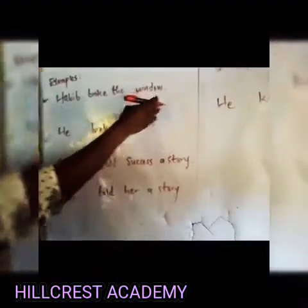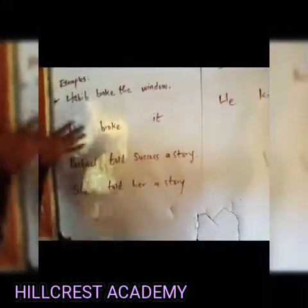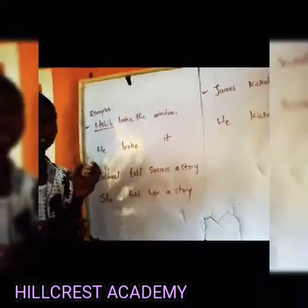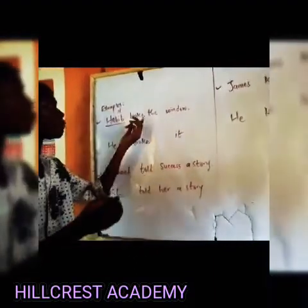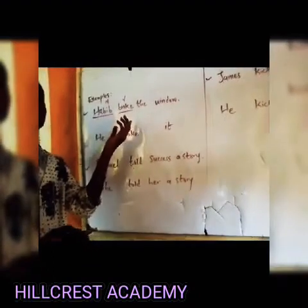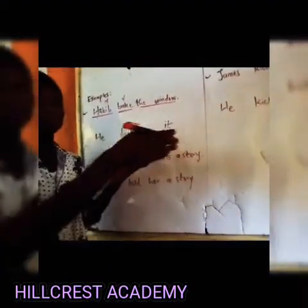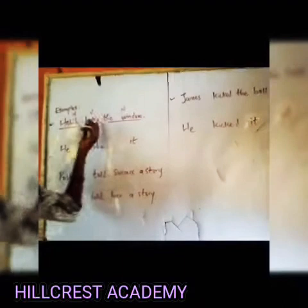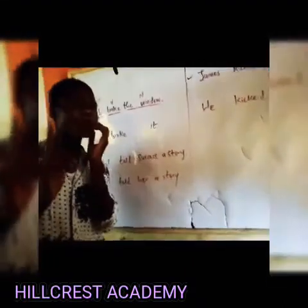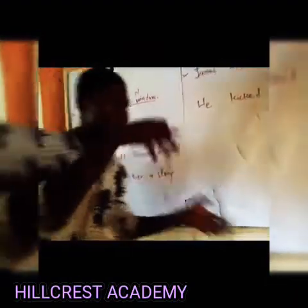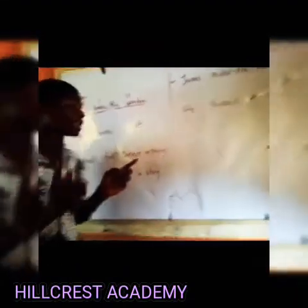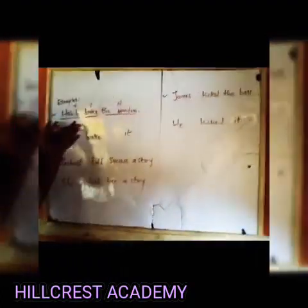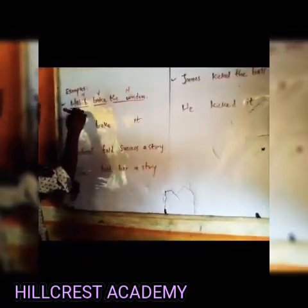The first example is: 'Abib broke the window.' Now if you look at this sentence, there are some basic elements here. Abib is a noun — the part of speech is a noun. Broke is a verb — it is an action. The window is another noun with an article, so it is also a noun. Now the subject is the doer of the action — the person that does something is called the subject of the verb. So who performs the action here? The person that does the action here is Abib. So Abib is the subject of the verb in this example.